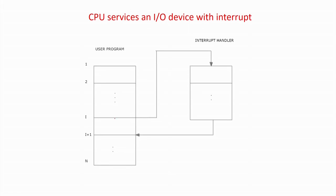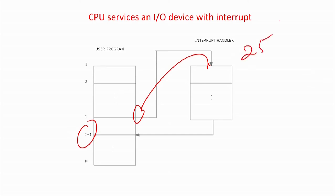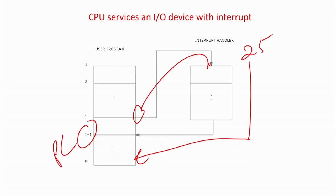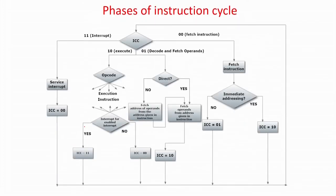Pictorially: the user program is running, an interrupt is detected, you go to the interrupt handler (ISR). The PC value changes from I+1 to the ISR address. The interrupt is serviced, then the value I+1 is restored to PC and execution continues from there.